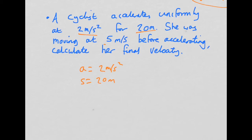She was moving at 5 meters per second before accelerating. So our initial velocity is 5 meters per second. Calculate her final velocity. Let's have a look. So V squared minus U squared equals 2AS. So we're trying to find this final velocity. What do we know in this equation? So we know that V squared minus U squared is equal to 2AS. So it's 2 times by A, which is 2, and we're going to times that by S, which is 20.